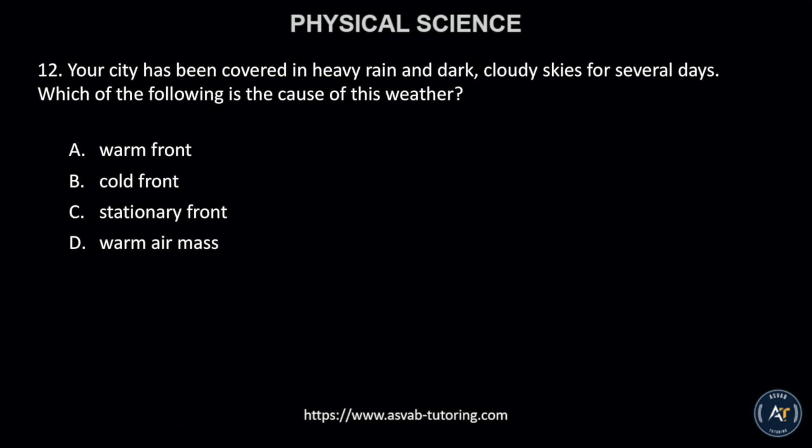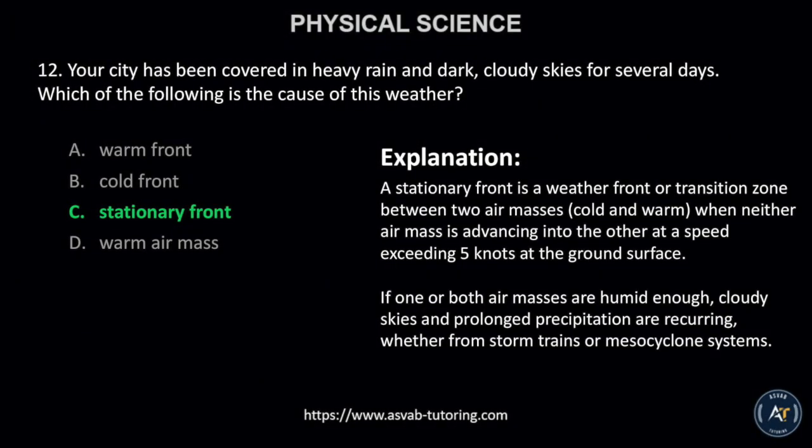Number 12. Your city has been covered in heavy rain and dark, cloudy skies for several days. Which of the following is the cause of this weather? A. Warm front, B. Cold front, C. Stationary front, or D. Warm air mass. The correct answer is C. Stationary front.